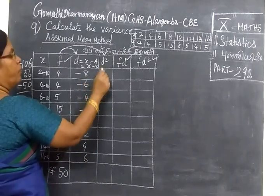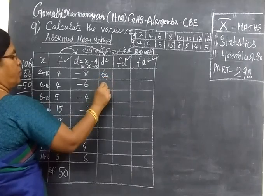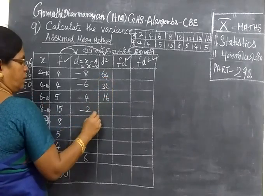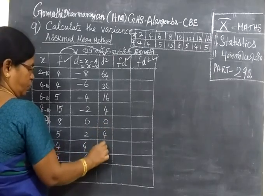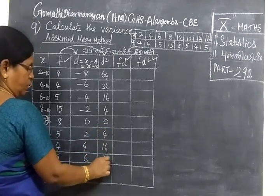Now you find D squared: 64, 36, 16, then 4, 0, 4, 16, and 36.